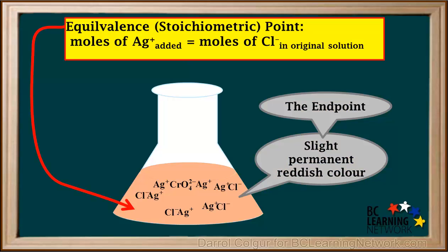The equivalence point, or stoichiometric point, of this titration is the point where the moles of Ag+ added to the flask is equal to the moles of Cl- that were in the original solution in the flask.